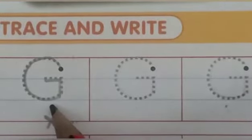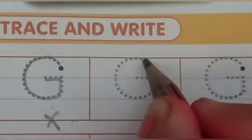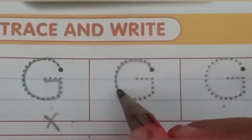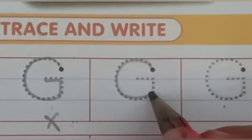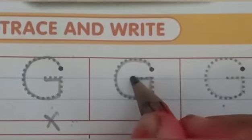Yes, try again. Make a curve, go to center line, and make slipping line. This is letter G.